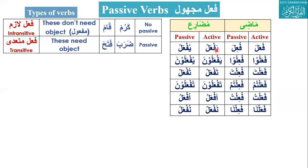In the mudari' (present/future), for passive voice: the first letter gets dhamma (pesh), any letter with a sukoon doesn't change, and the second-last letter gets fatha (zabar). So yaf'alu becomes yuf'alu; yaf'aluna becomes yuf'aluna; taf'alu becomes tuf'alu; taf'aluna becomes tuf'aluna; af'alu becomes uf'alu; naf'alu becomes nuf'alu.